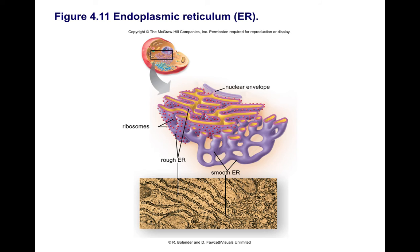Let's move on to talk about endomembranes — these are all the membranes within the cytoplasm. There are many of these, including the nuclear envelope which we just saw, the endoplasmic reticulum, the Golgi apparatus, and many different vesicles. The overall function of these membranes is to form compartments within a cell, dividing it into functional and structural parts. In addition, they play an important role in transporting materials within the cell.